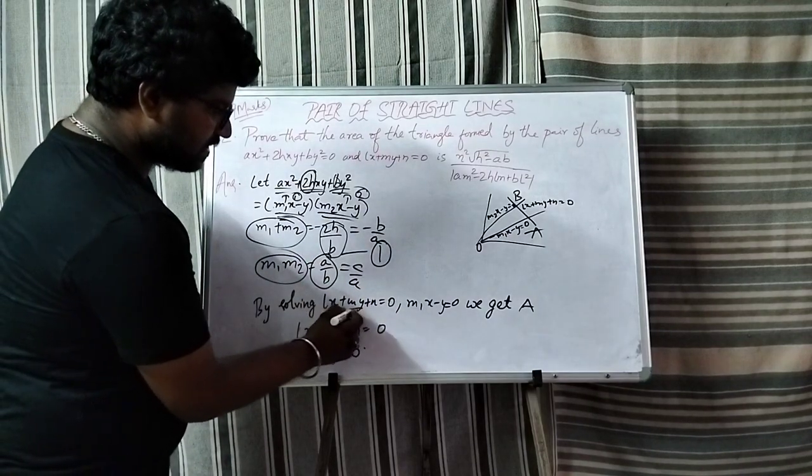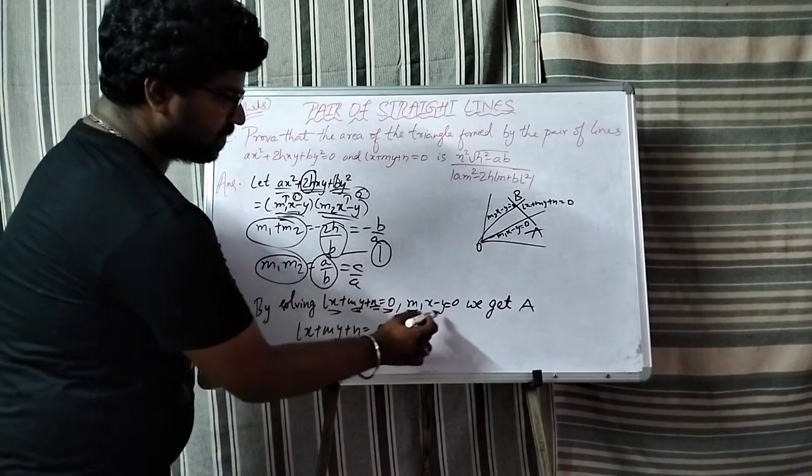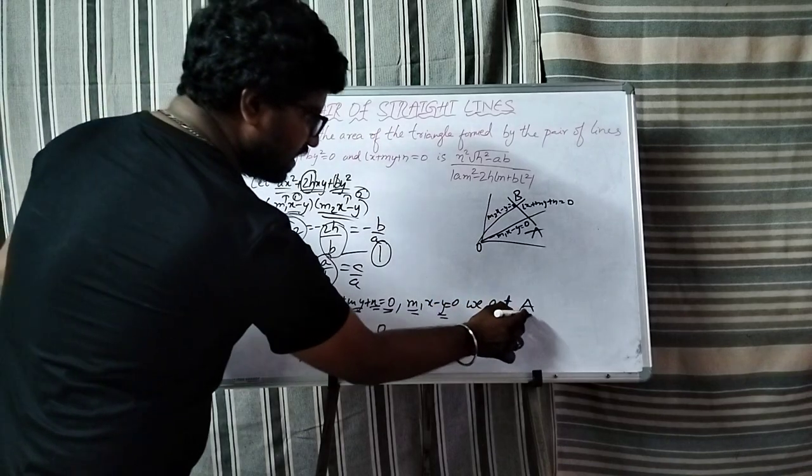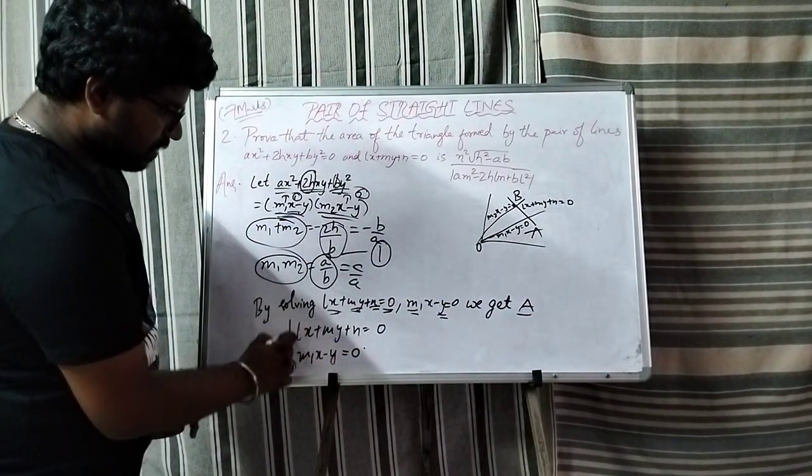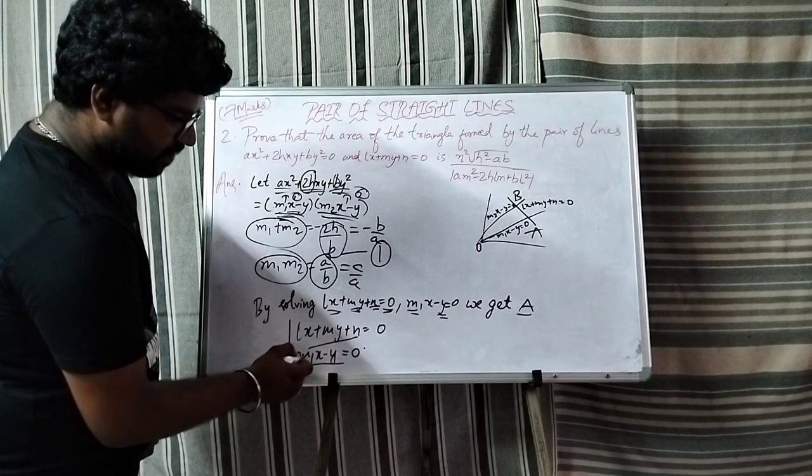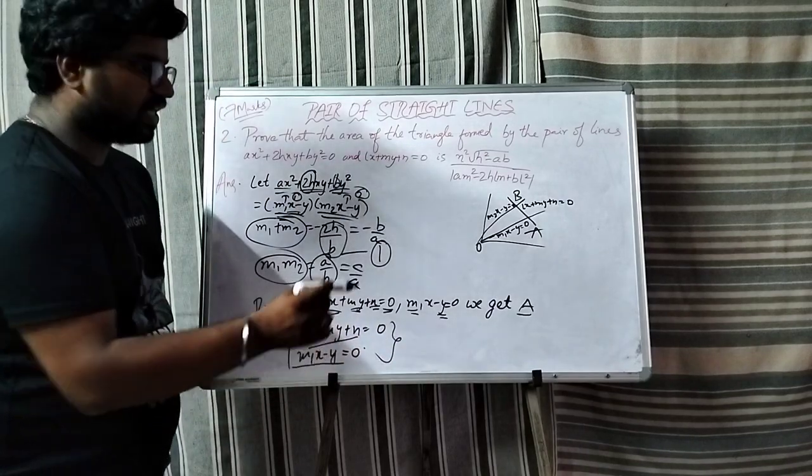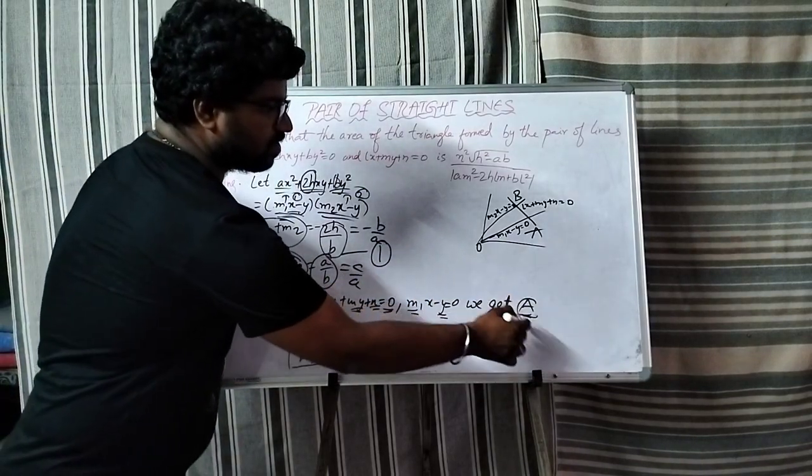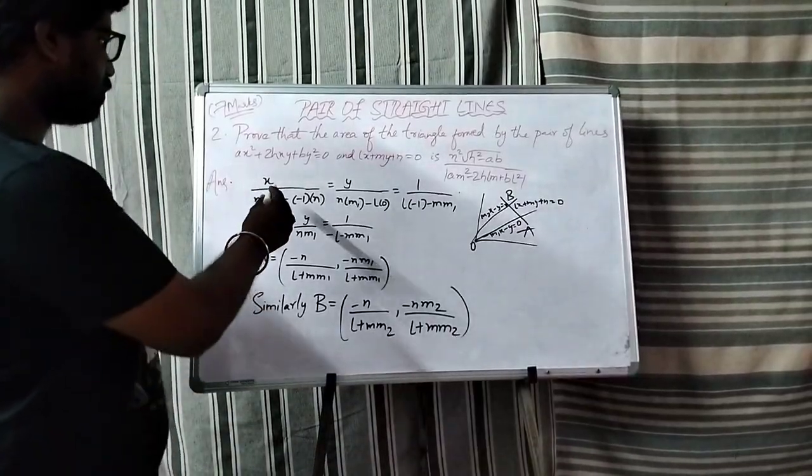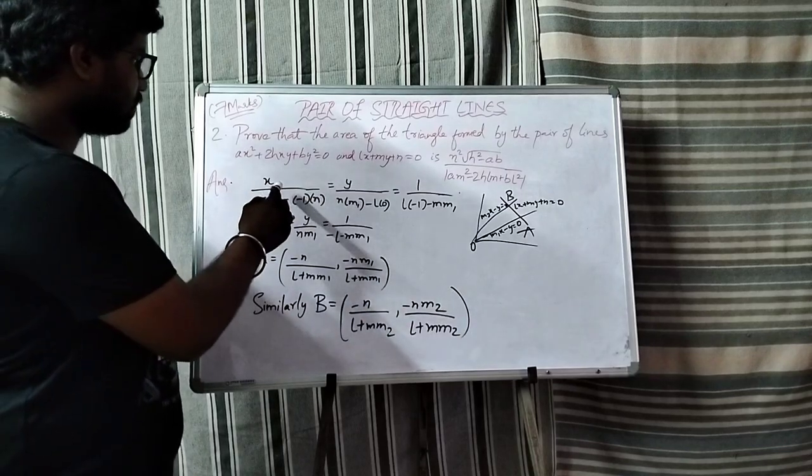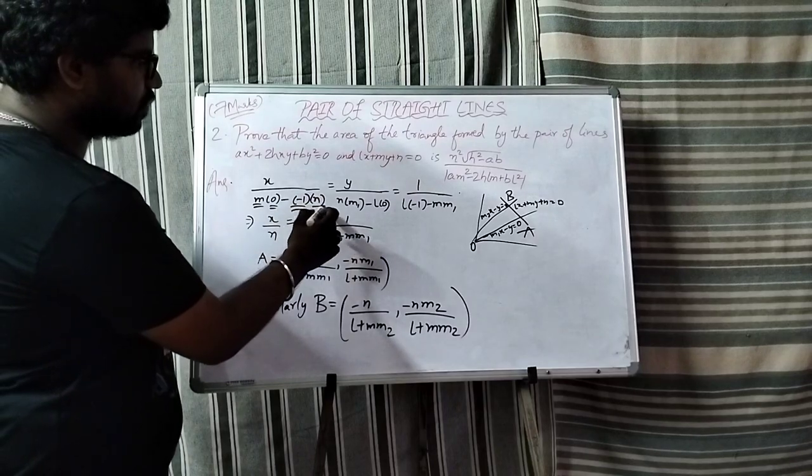Solving lx plus my plus n equal to 0 and first straight line m1x minus y equal to 0. So we find the point. lx plus my, substitute y as m1x, equals 0.